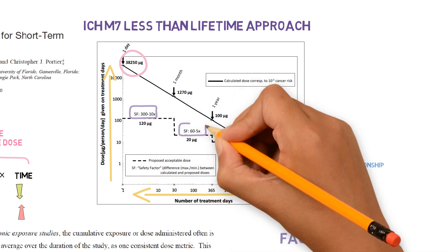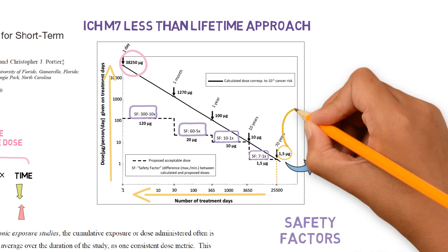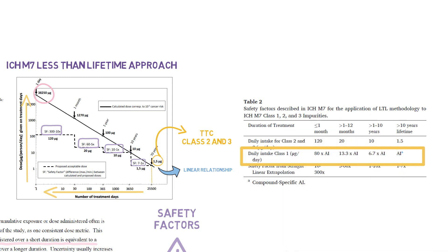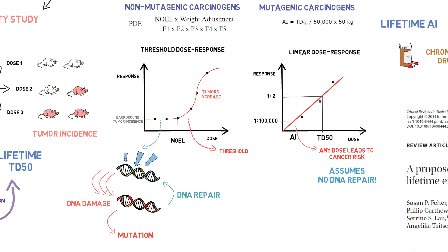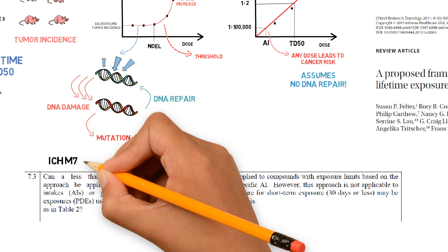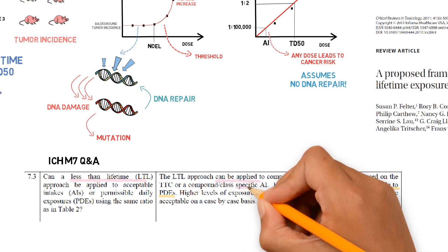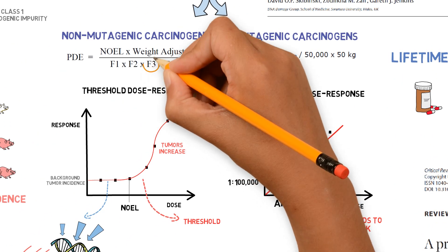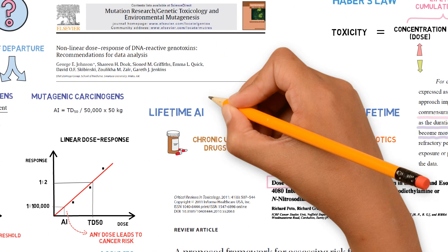This graph applies when the TTC is used for class 2 and class 3 impurities, but the same concept can be used with class 1 impurities, basically multiplying the AI by the corresponding durational factors. The less-than-lifetime approach is not applicable when we calculate the limit based on the PDE, although it is applicable when the limit is based on the AI. This is because the PDE calculation already incorporates a factor for time adjustment, which is not true for the AI. Because the AI is based on a lifetime TD50, when the exposure is for less than a lifetime, this needs to be adjusted.